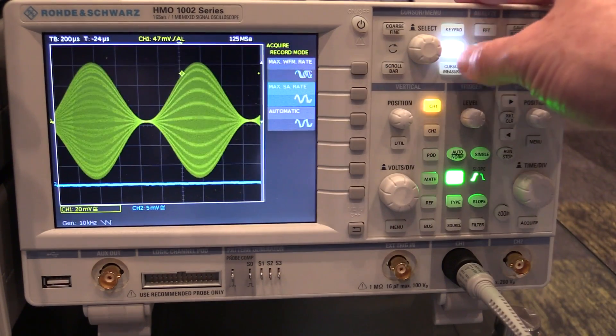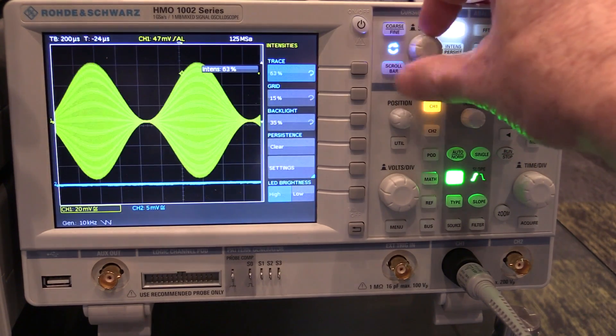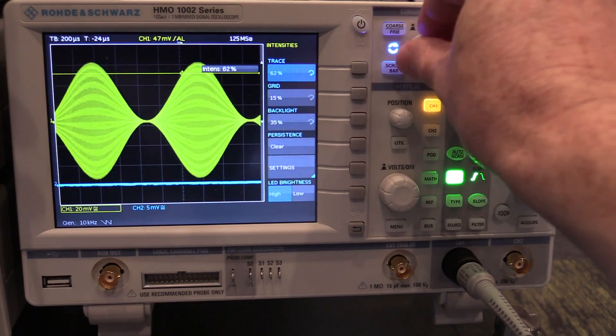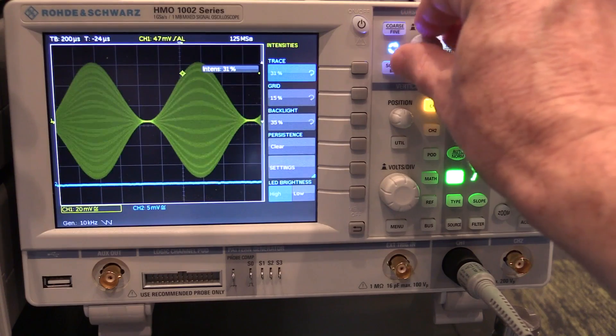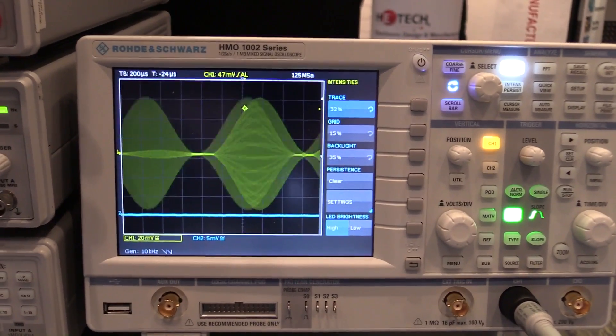So anyway, there's our variable intensity display. It's kinda sorta doing it. So we can, it doesn't have a dedicated intensity control, which I would like. But it's trying, it's doing a half reasonable job of that. You can see the peaks in there.